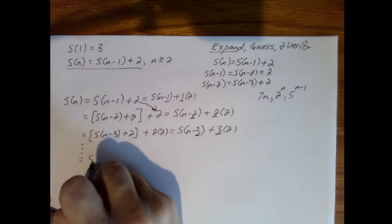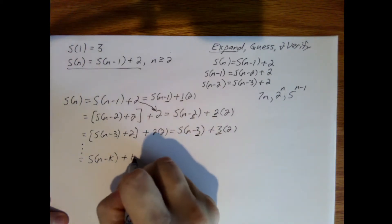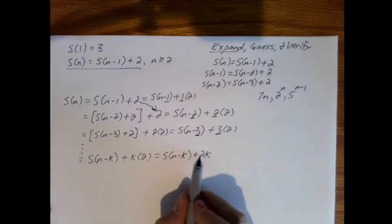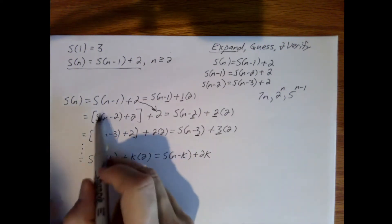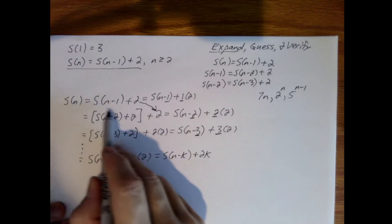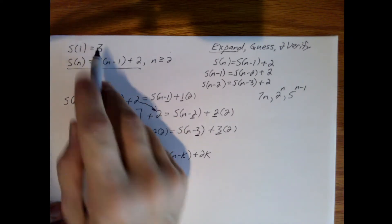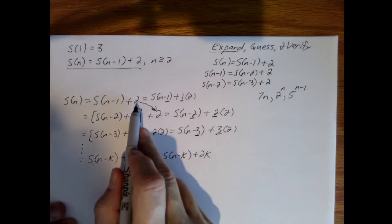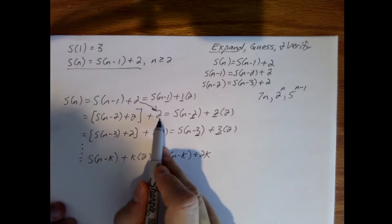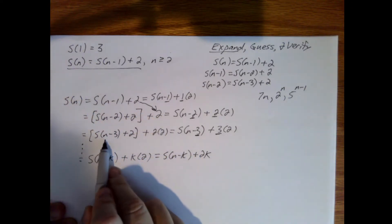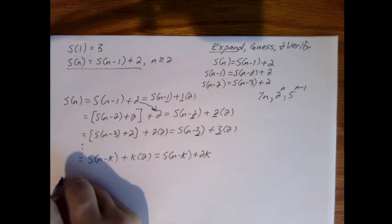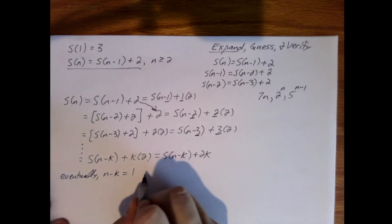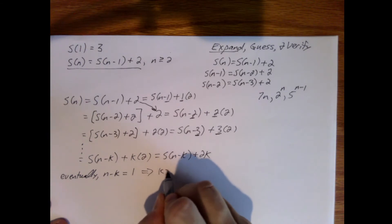So what this eventually becomes is s of n minus k plus k 2s, which I'll rewrite as s of n minus k plus 2 times k. We're starting at some value of n and working our way back to the basis. Imagine n was 4: s of 4 equals s of 3 plus a single 2, and also s of 4 equals s of 1 plus three 2s. So eventually n minus k equals 1, and by algebra k equals n minus 1.